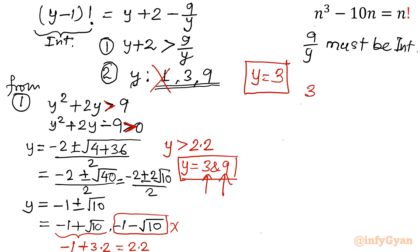So let me put y = 3. So y = 3, then (3-1)! equal to 3 + 2 - 9/3. So it will be 5 - 3, so 2. Right hand side is 2. Left hand side is 2!, that means 2, which is true.